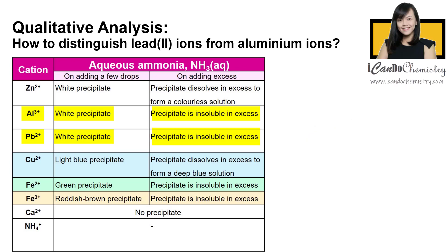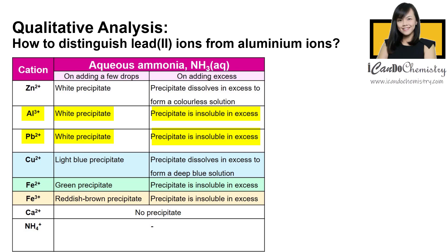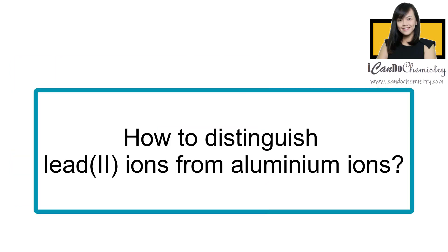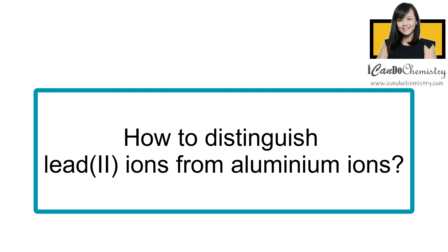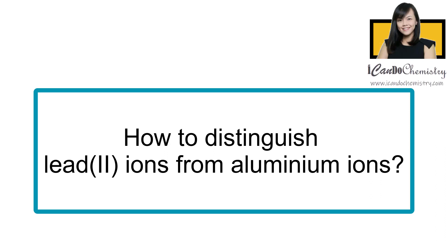So what can we do to distinguish lead-2 ions from aluminium ions? There are two ways that you can distinguish lead-2 ions from aluminium ions.